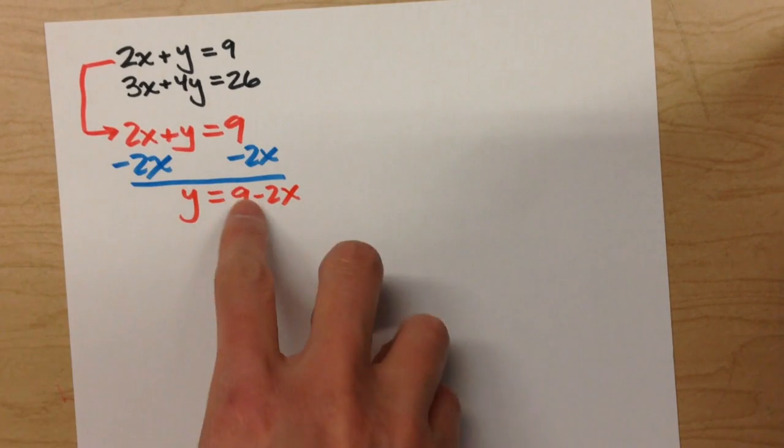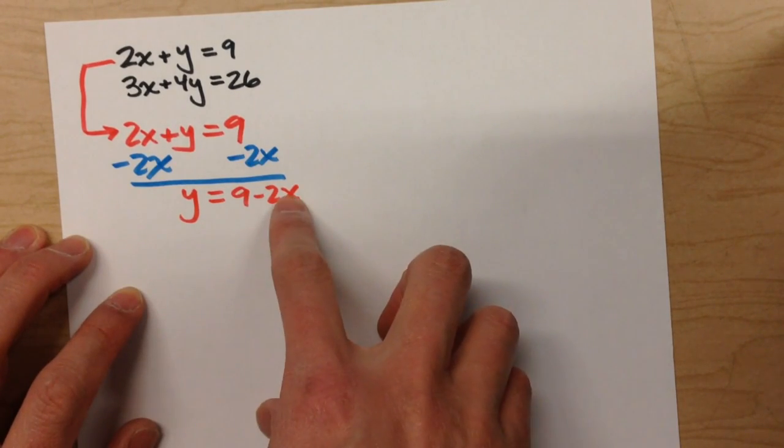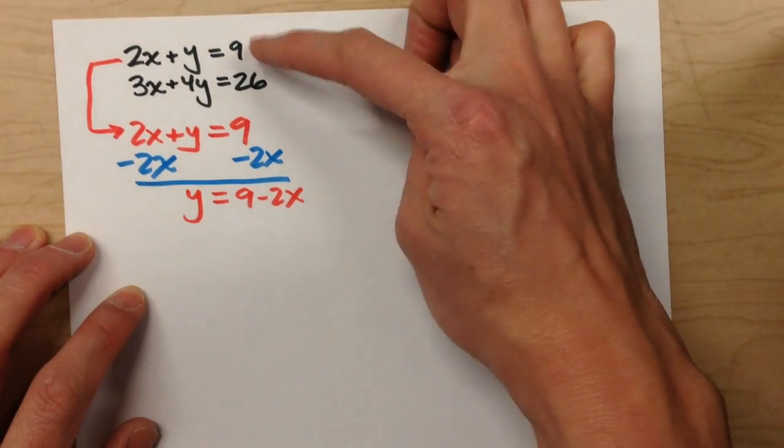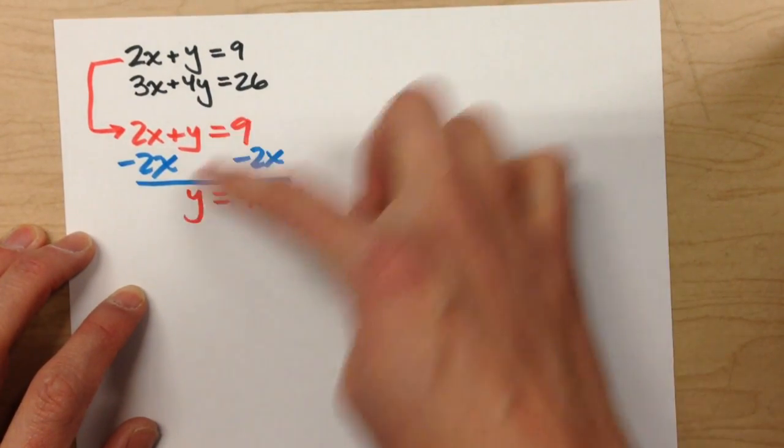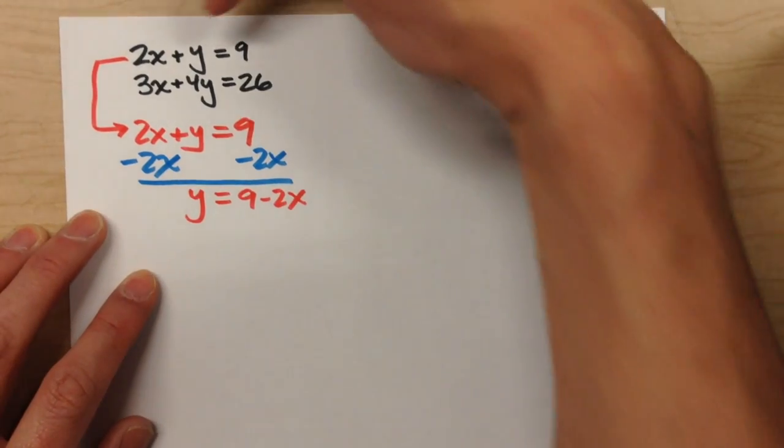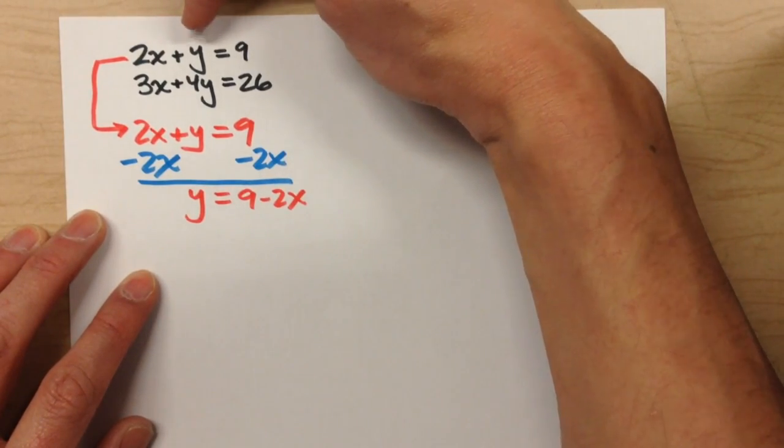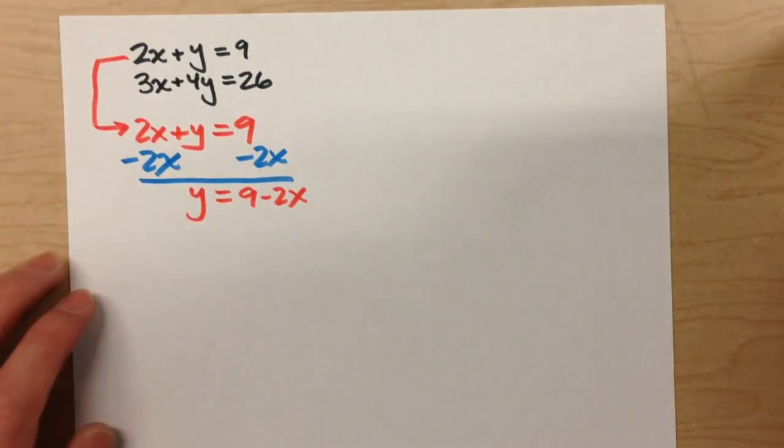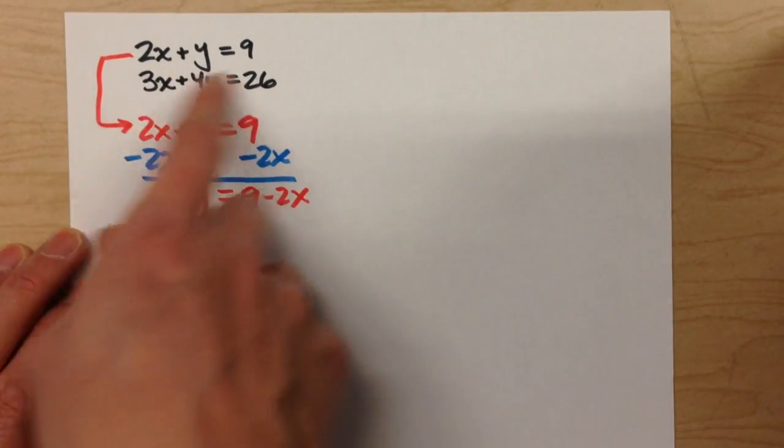Now I can substitute 9 minus 2x in for y into the second equation. Notice, I picked the first equation to solve for y on purpose because y was already by itself and it's pretty easy to get. The second equation I could have done it, but it would have been a lot harder.